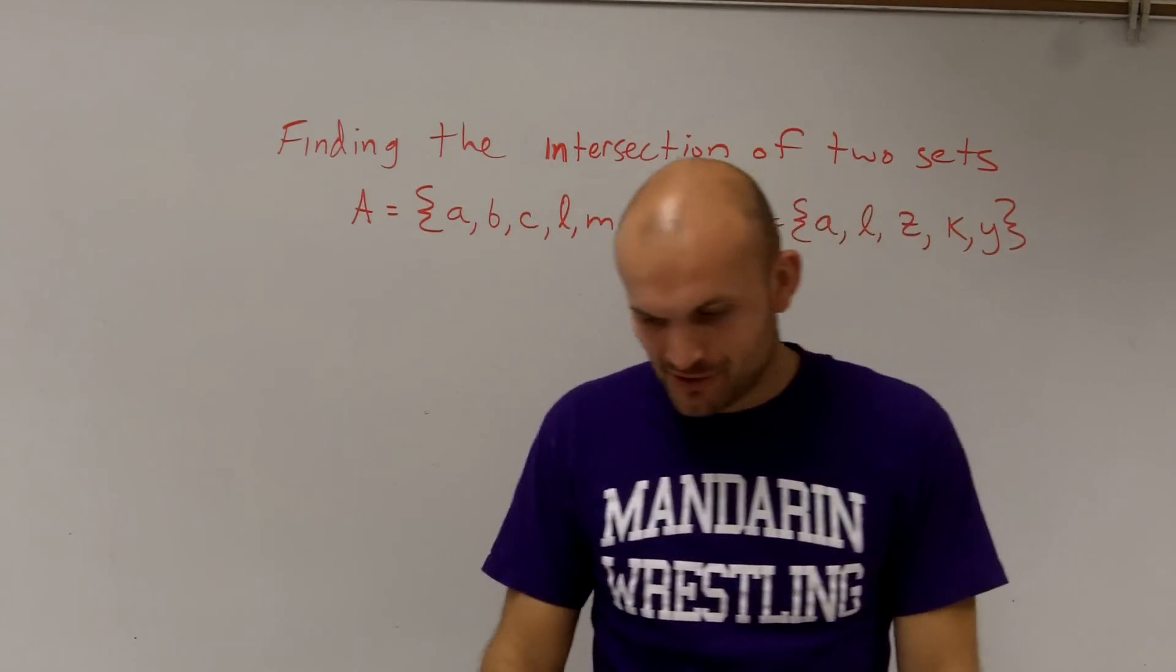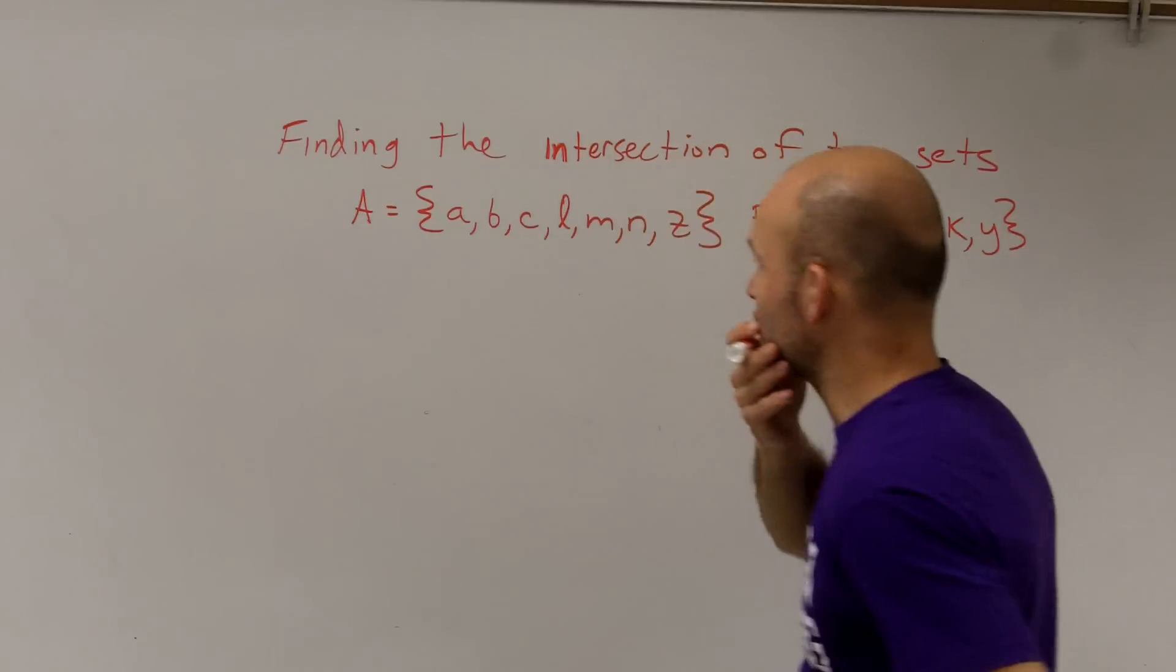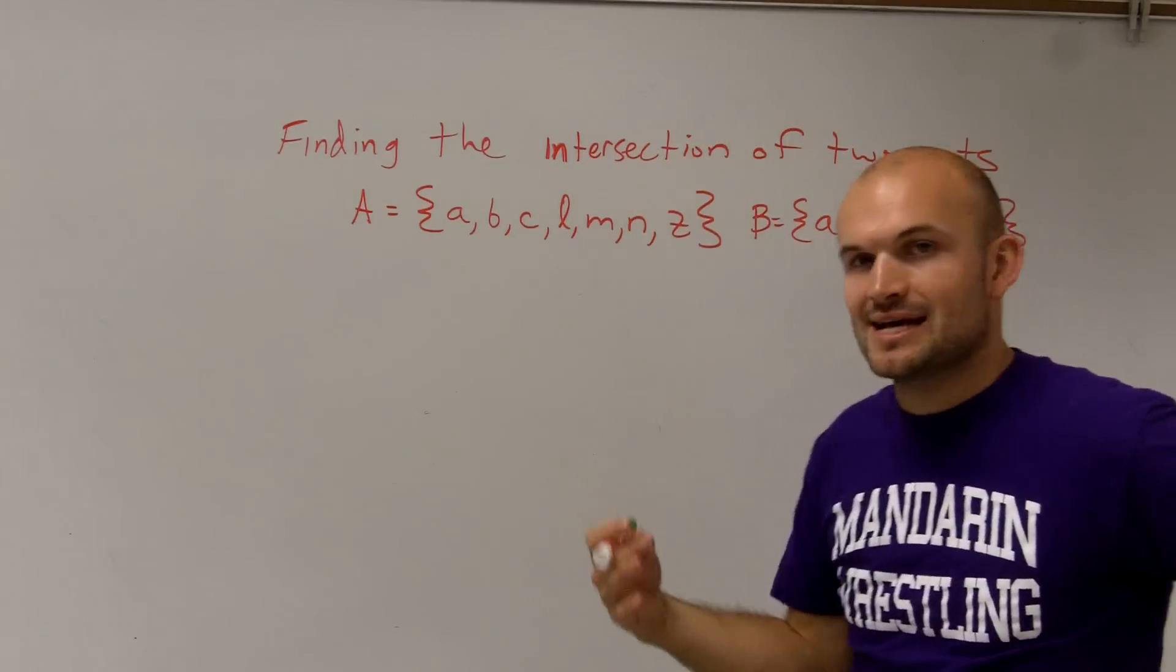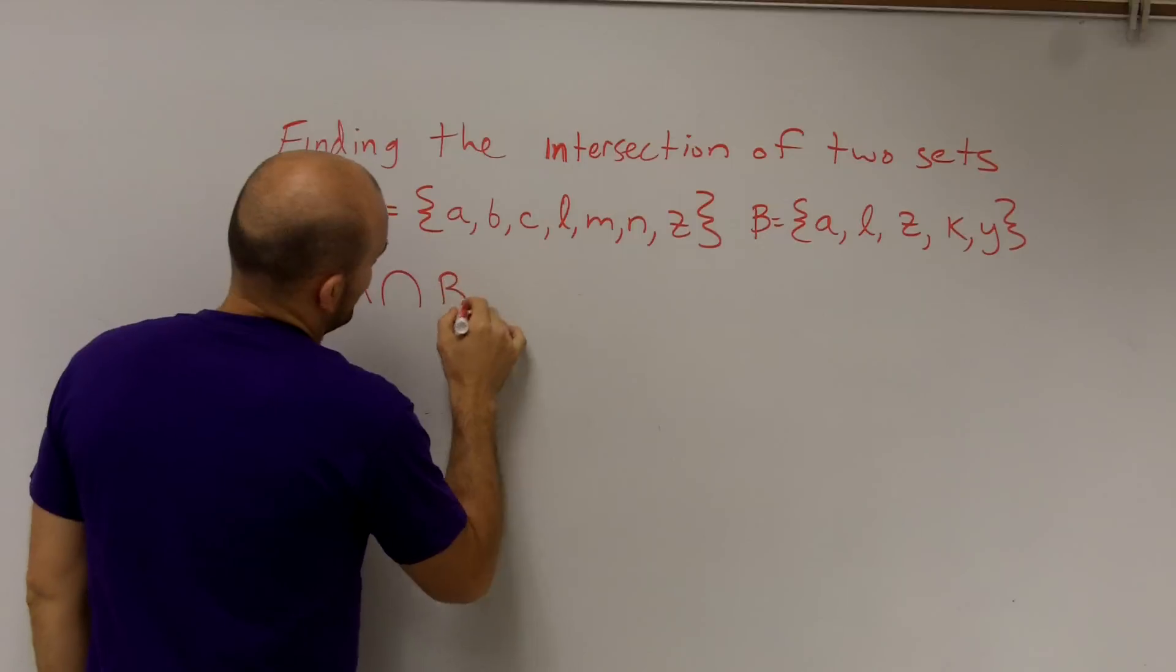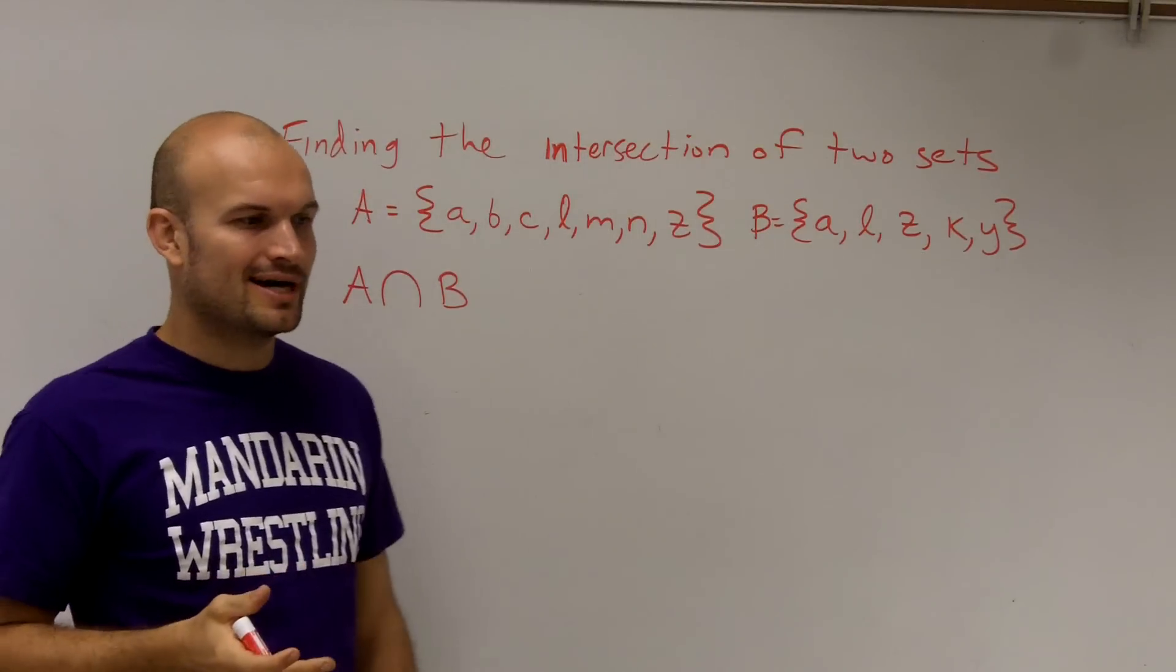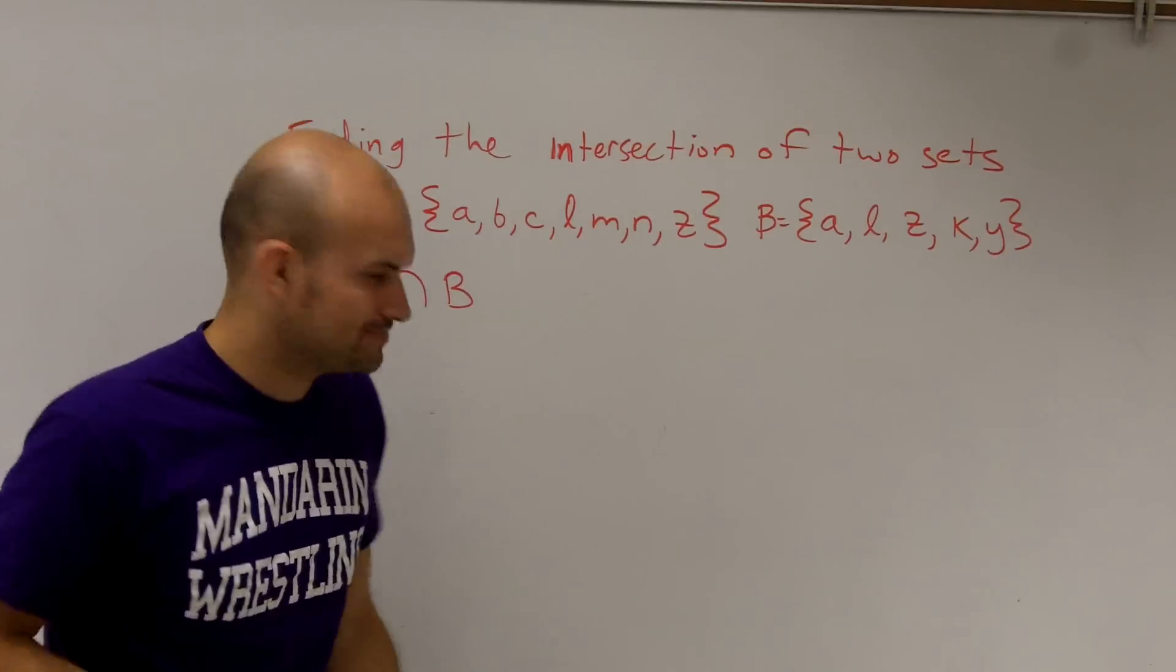Find the intersection of two sets. The intersection, or the definition of the intersection, kind of looks like an upside-down horseshoe.